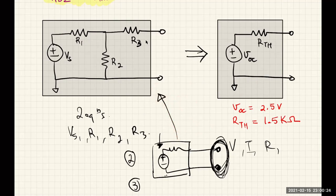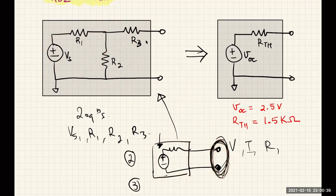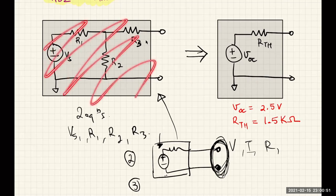Keep in mind that this second step — developing a generic measurement method — has nothing to do with the specific circuit. You only have access to the two output terminals, so your method should not involve instructions like 'turn off Vs' or 'connect R1 to ground,' because you have no idea what's inside the black box.